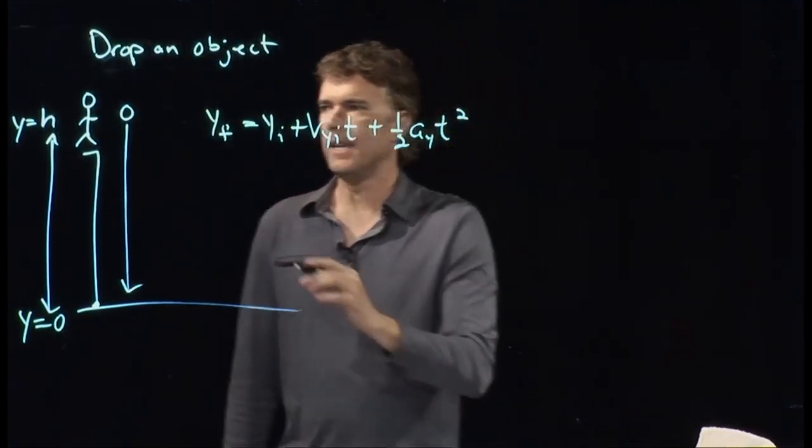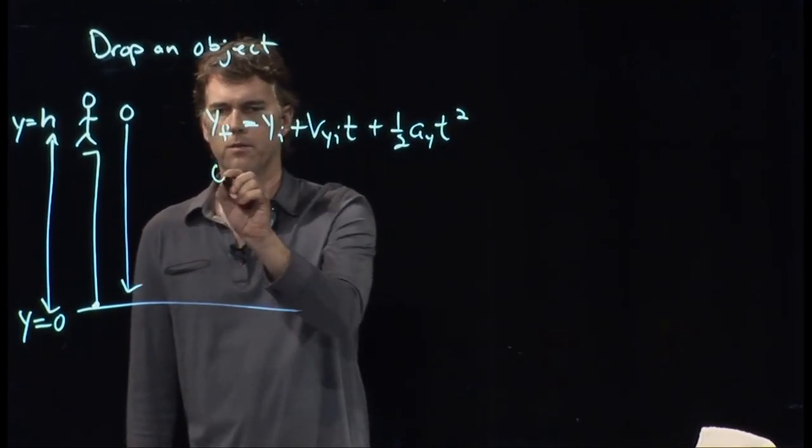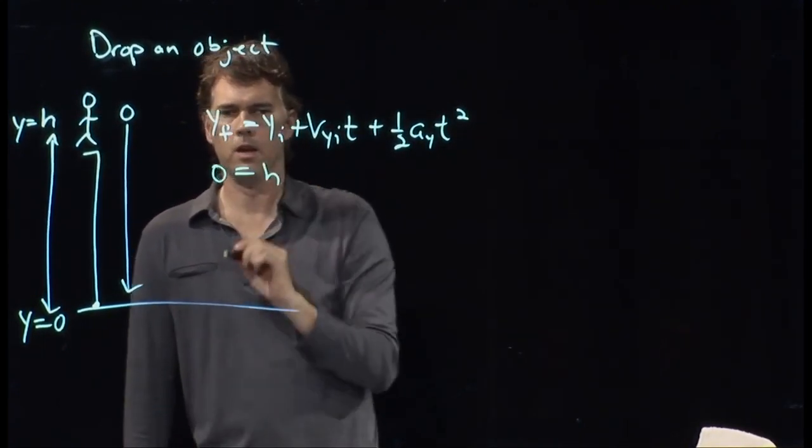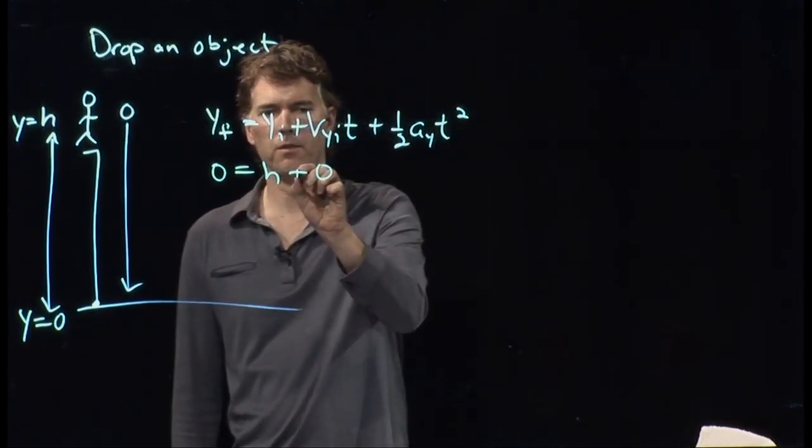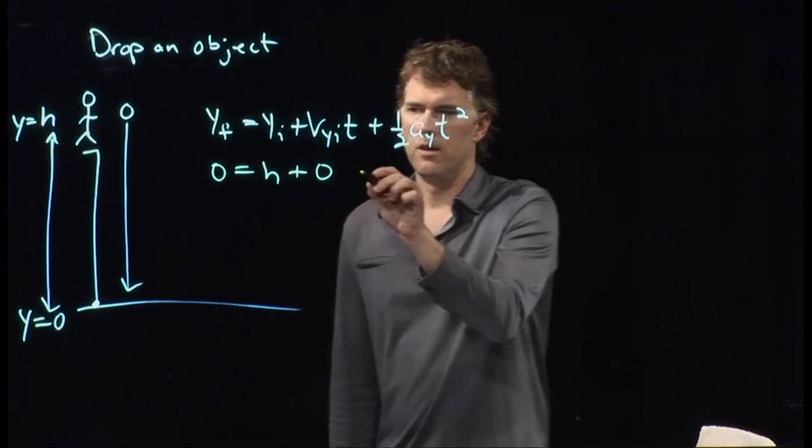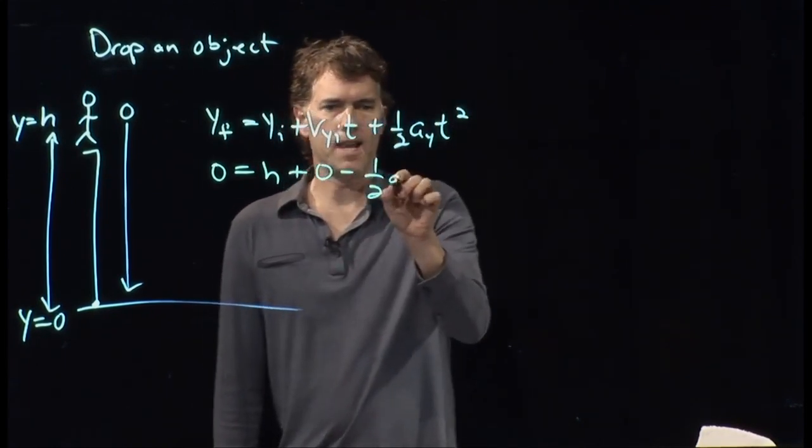And so y equals h is in fact where we started. We're going to end up on the ground. We're going to start at height h. We're dropping it from rest, so that is zero. Ay is of course negative g.